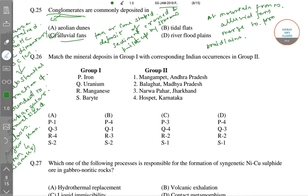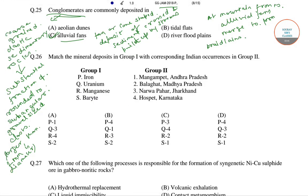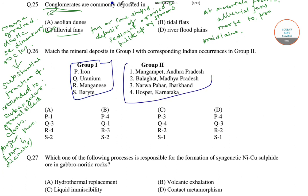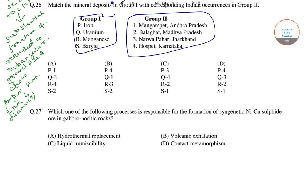Now let's move to the next question. In this question we have to match the mineral deposits given in group 1 with the corresponding Indian occurrences in group 2. The first one is iron. The mineral deposits of iron are found in Hospet, Karnataka. So the first combination is P4.